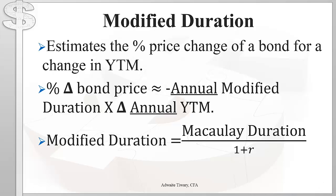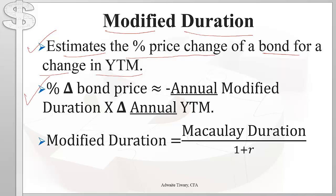Let's start by looking at modified duration. Modified duration estimates the percentage change in a bond's price for a given change in its yield to maturity. It tells us that the percentage change in a bond's price is approximately equal to minus 1 times the annual modified duration times the change in the annual yield to maturity. We multiply by minus 1 because bond prices and yields are inversely related — if the yield goes up, bond prices go down, and vice versa. Make sure to use these terms expressed annually.